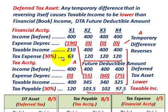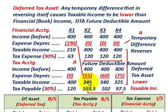For our tax expense under financial accounting, we had $63,000 in year X1 and $120,000 for each of the next three years. For tax accounting, applying the 30% tax rate to our taxable incomes: year two gives $103,500, year three gives $102,000, and year four gives $97,500. So we have both lower taxable income and lower tax payable under tax accounting.